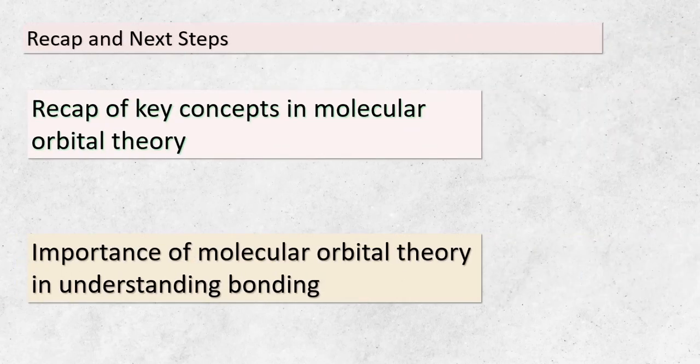Let's take a moment to summarize what we've learned so far in our exploration of molecular orbital theory. We've grasped the idea that atomic orbitals combine to form molecular orbitals, which can span an entire molecule. These molecular orbitals play a significant role in bonding, especially in metals. We've also understood that a molecular orbital can hold either 0, 1, or 2 electrons, influencing the substance's properties. As we wrap up this section, remember the importance of molecular orbital theory in unraveling the mysteries of bonding and materials. In our next session, we'll venture into the practical applications of this theory, discovering how it helps us understand and manipulate the world around us.